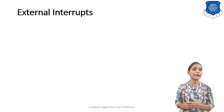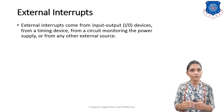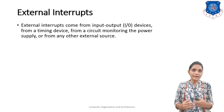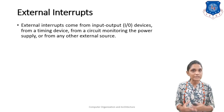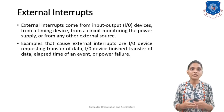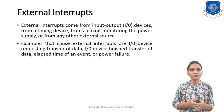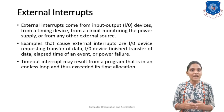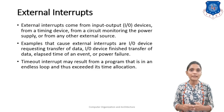First, external interrupts come from input/output devices, from a timing device, from a circuit monitoring the power supply, or from some other external source. Examples that cause external interrupts are: I/O devices requesting transfer of data, I/O devices finishing transfer of data, elapsed time of an event, or power failure. A timeout interrupt may result from a program that is in an endless loop and has exceeded its time allocation.